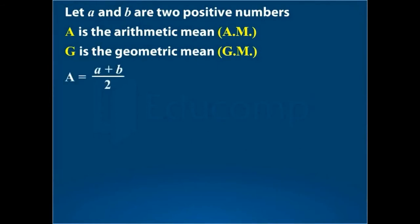We know that the arithmetic mean between two positive real numbers is given by A equal to A plus B over 2, and their geometric mean is given by G equal to square root of A into B.